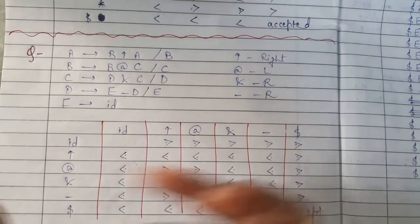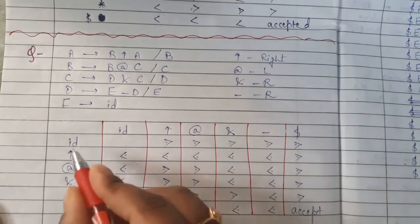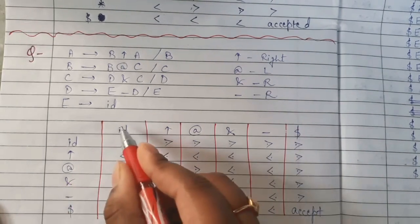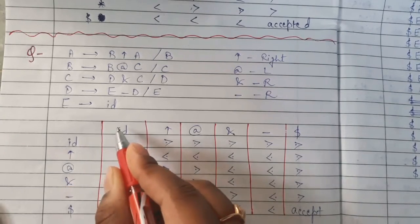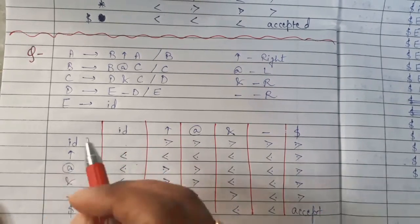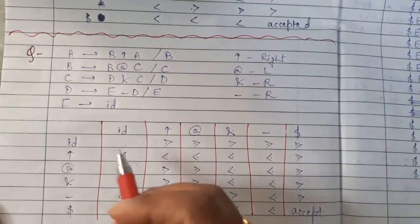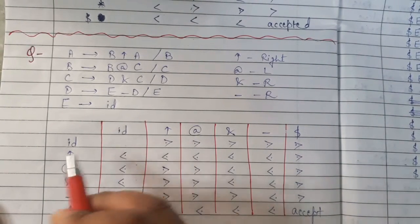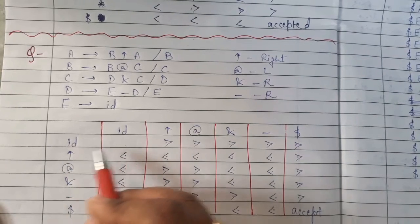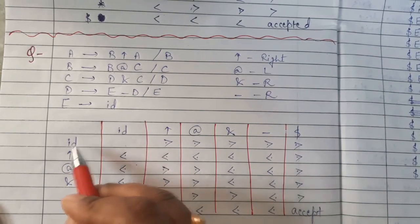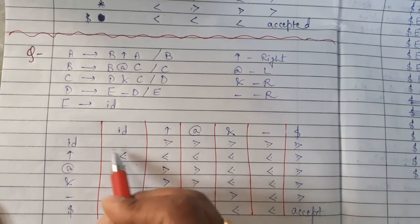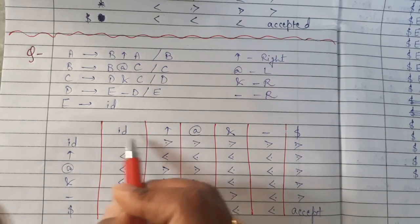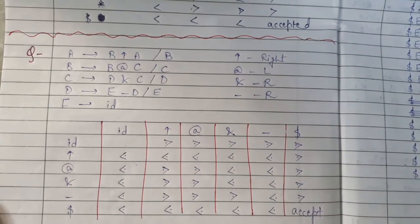Now, how to fill this table. First rule: when comparing id with id, we cannot decide their priority, so the intersection cell of id and id will always be left empty — we write a dash there. That is the first rule.